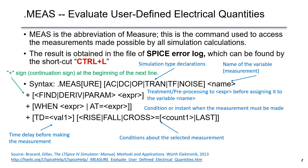Measure is a built-in function in LTSpice to evaluate user-defined electrical quantities over different types of simulation results. Measure is helpful to post-process the simulation results. MEAS is an abbreviation of measure. .MEAS is the command used to access the measurements made possible by all simulation calculations, including AC analysis.